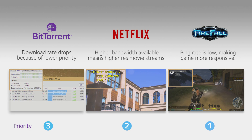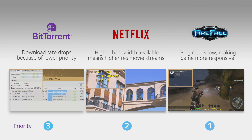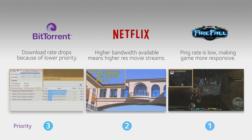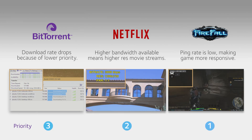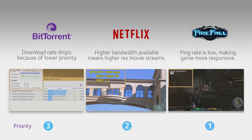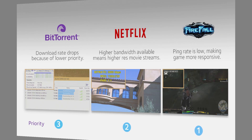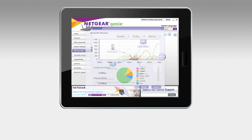The Netgear router handles all this dynamic bandwidth allocation seamlessly and automatically. There's no setup or user configuration required. You can also monitor your network traffic from your mobile device and view your bandwidth usage by device or by application.